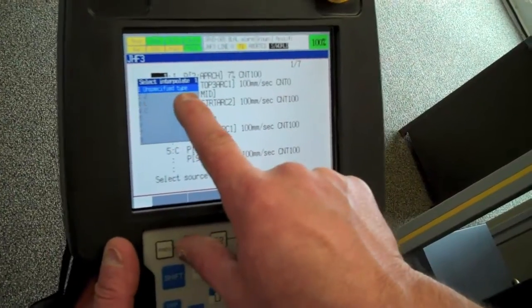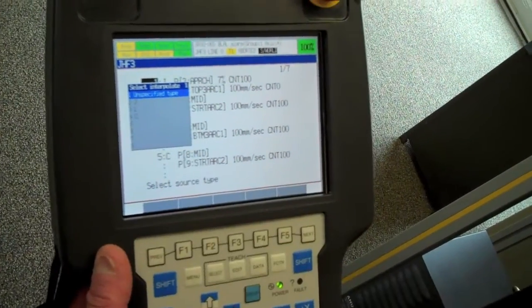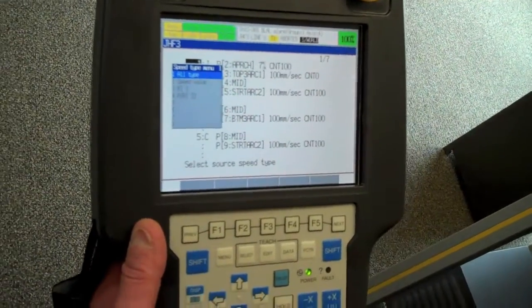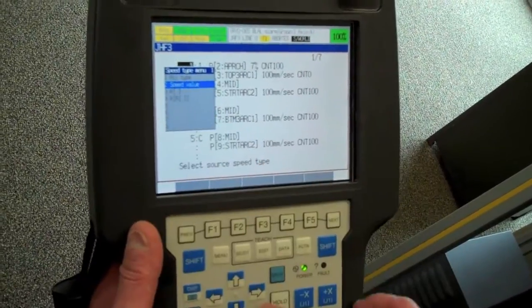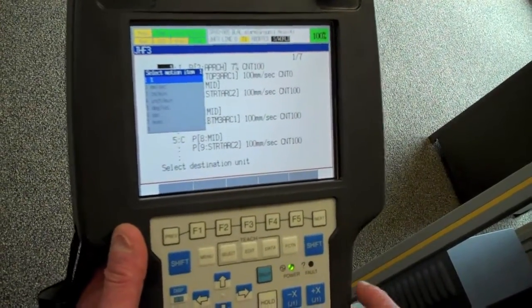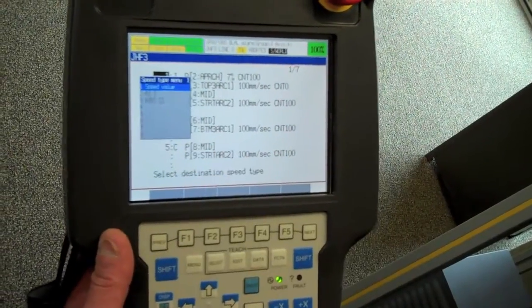We're going to select unspecified type, so it changes the speed for all joint, linear, and continuous motions. And we have to select again what source speed type. And that's the speed value that we want to change. And what kind of speed value do we want to change? Millimeters per second. Select that.